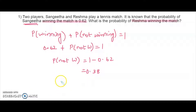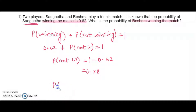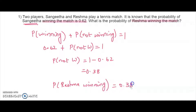If this person is not winning and there are two people playing the game, if one is not winning, automatically that will be the probability of the other person winning. So the probability of Reshma winning will be 0.38, because that many games — the probability of not winning for Sangeeta was 0.38.